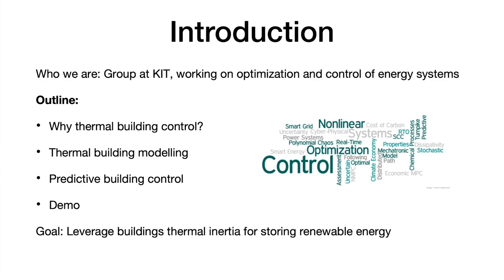Thanks for handing over to me. My name is Alexander Engelmann, also from Karlsruhe Institute of Technology. In our group at KIT, we focus on optimization and control of modern energy systems. In contrast to the previous talk, we use optimization not for designing a specific system such as battery sizing, but for optimal control — meaning for an existing system, we would like to optimally control it.